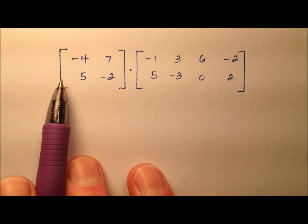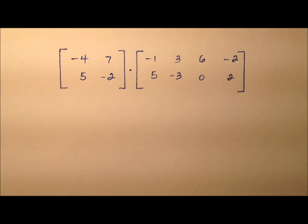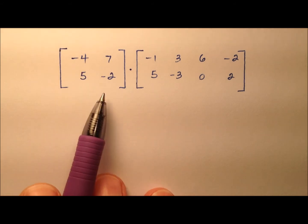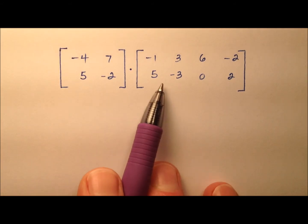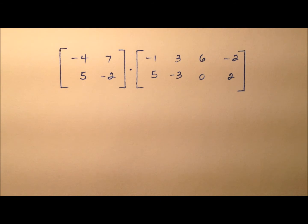In this example, we're going to look at this matrix multiplication here. It looks like our first matrix is a 2 by 2 square matrix, and we're going to multiply that by a 2 by 4 matrix.